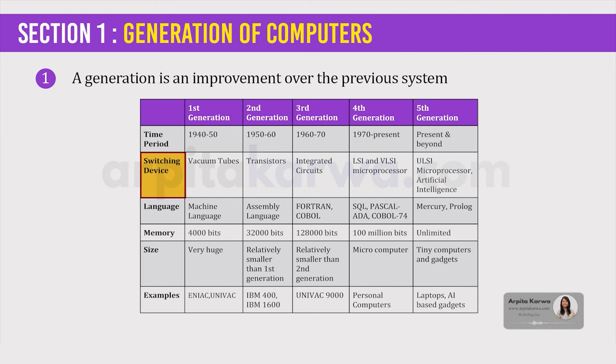Now switching devices my friends are the devices which control the electric current in the computer system. The first generation computers used vacuum tubes while the second generation used transistors. Now when we place a number of transistors on a circuit board, it is known as integrated circuit which is used by the third generation computers. The fourth generation computers on the other hand use LSI and VLSI microprocessors. VLSI stands for very large scale integrated. Now a number of integrated circuits placed together make up a microprocessor. The fifth generation computers use ULSI, that is ultra large scale integrated microprocessors and artificial intelligence.